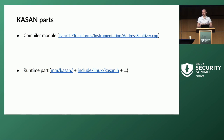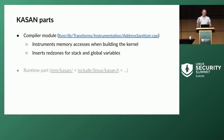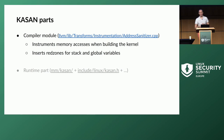Generic KASAN consists of two parts: a compiler module implemented in Clang and GCC, and a runtime part implemented in the Linux kernel. The compiler module first instruments every memory access — before each memory access done by the kernel, the compiler adds some validity checks. The compiler also inserts red zones for stack and global variables. The runtime part maintains shadow memory, which reflects the state of kernel memory — which memory is accessible and which is not.